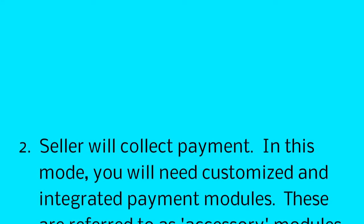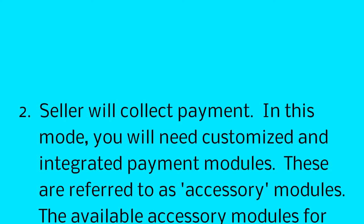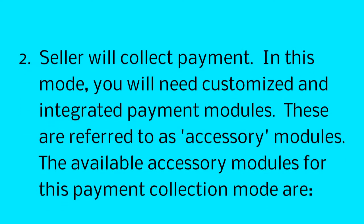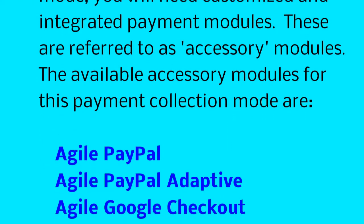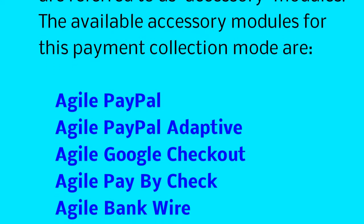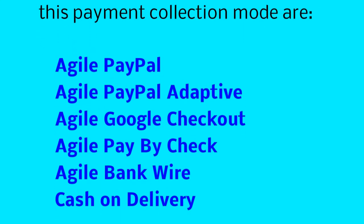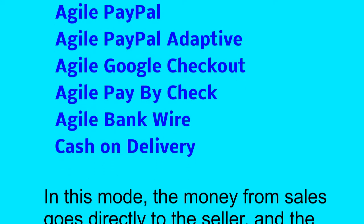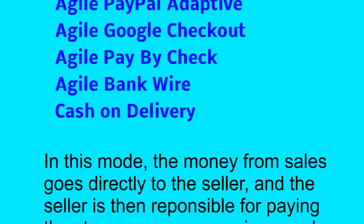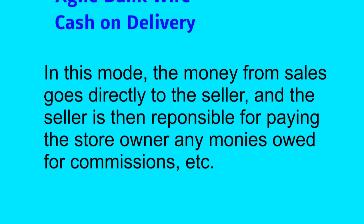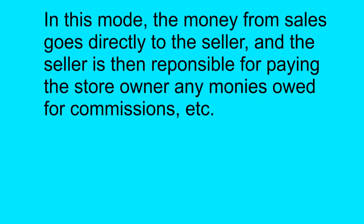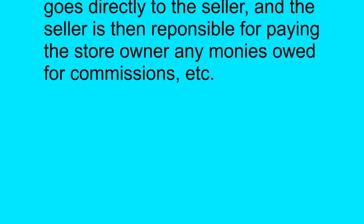2. Seller Will Collect Payment — in this mode, you will need customized and integrated payment modules. These are referred to as accessory modules. The available accessory modules for this payment collection are: Agile PayPal, Agile PayPal Adaptive, Agile Google Checkout, Agile Pay-By-Check, Agile Bank Wire, and Cash on Delivery. In this mode, the money from sales goes directly to the seller, and the seller is then responsible for paying the store owner any monies owed for commissions, etc.